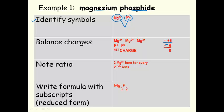The only way to do that is to get 3 magnesiums and 2 phosphide ions to give us a net charge of 0.